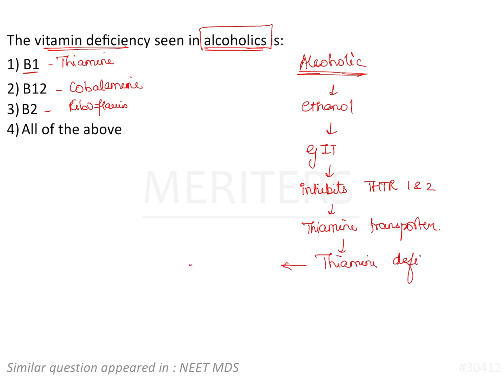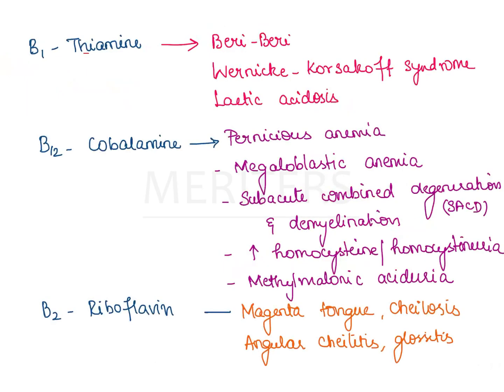Thiamine has a very important role in carbohydrate metabolism because it is required for certain important reactions in carbohydrate metabolism. Therefore, a chronic alcoholic patient will have nutritional deficiencies, specifically thiamine deficiency. So the right answer is option 1, that is B1 — thiamine deficiency is seen in alcoholics. We will also see some other important manifestations seen in the deficiency of all three vitamins given in the options.